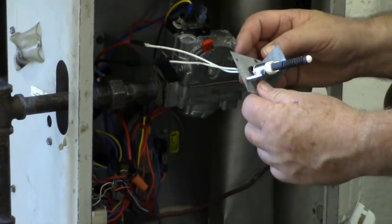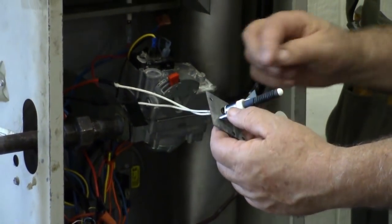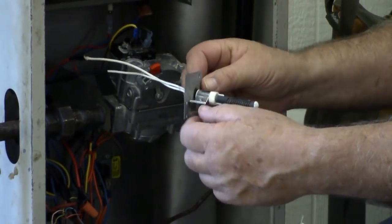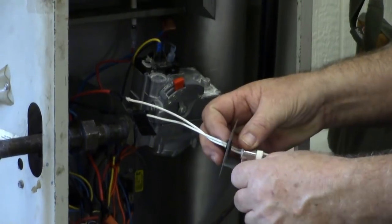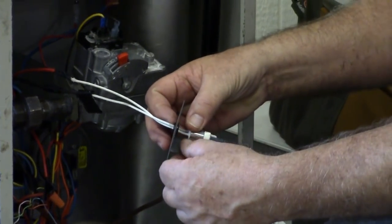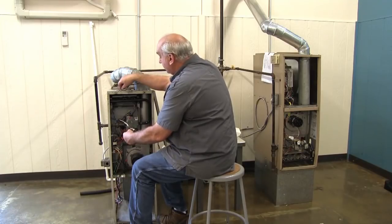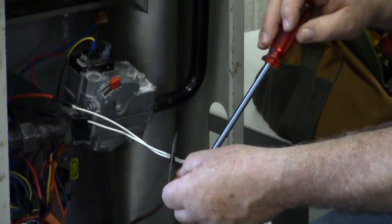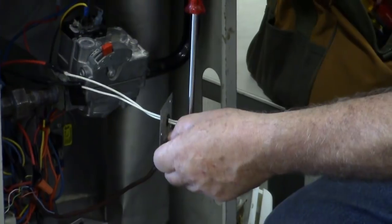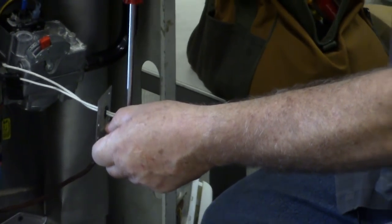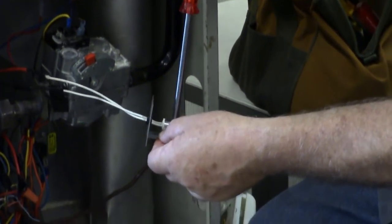Again, we want to be careful not to touch the carbon part. We take the bracket, we mount it over here. We'll take the screw, get it to where it will lay in the hole, take our quarter inch nut driver and tighten that screw up.